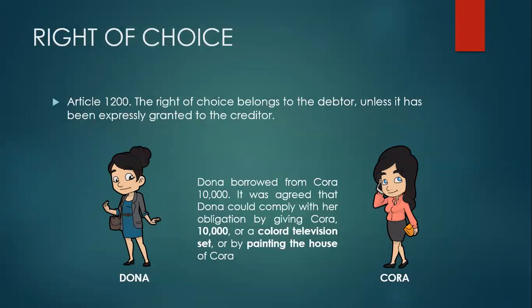Now, who has the right of choice in alternative obligation? Under Article 1200, the right of choice belongs to the debtor unless it has been expressly granted to the creditor. So in the given example, Donna is the debtor here and Cora is the creditor. Therefore, the right of choice belongs to Donna, because she is the debtor, unless Donna will expressly give the right of choice to Cora.